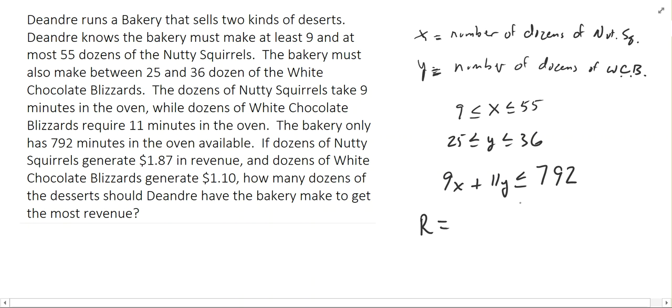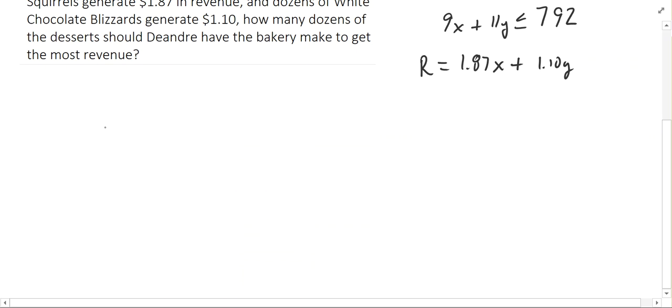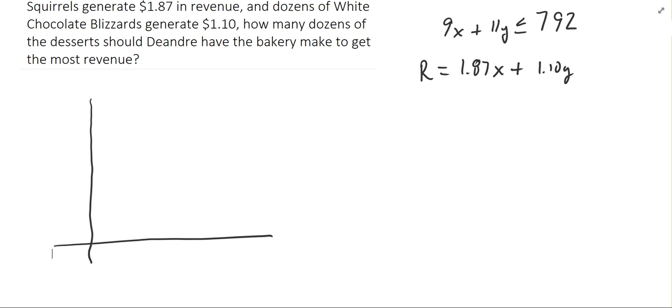And we're trying to maximize the revenue. The revenue we're going to make is $1.87 per dozen of the nutty squirrels, so $1.87 times X plus $1.10 times Y would be our revenue. And so what we want to do is solve these by graphing. We also have the restrictions that X must be greater than 0 and Y must be greater than 0.